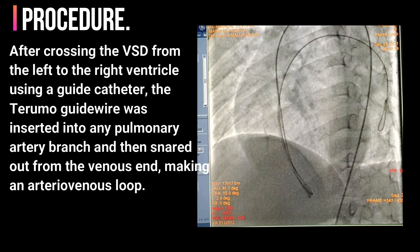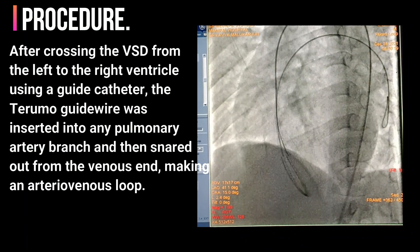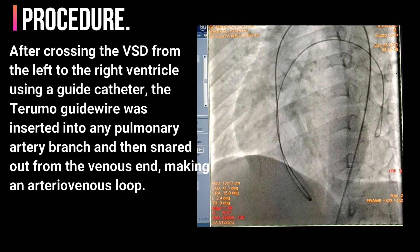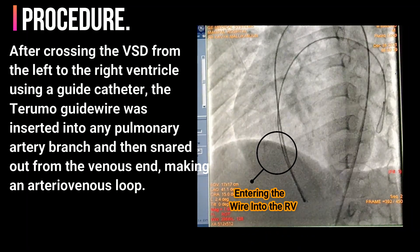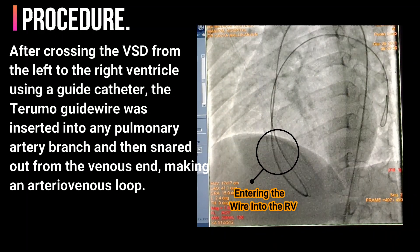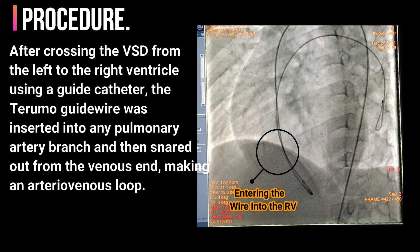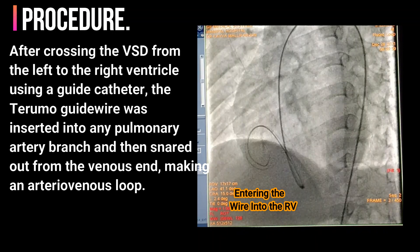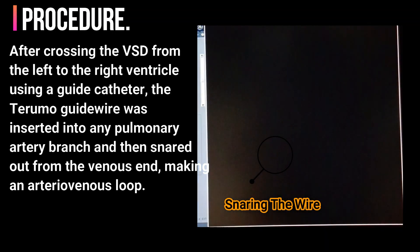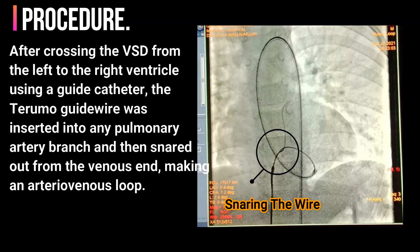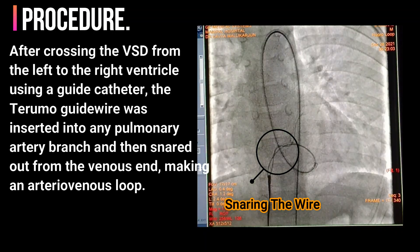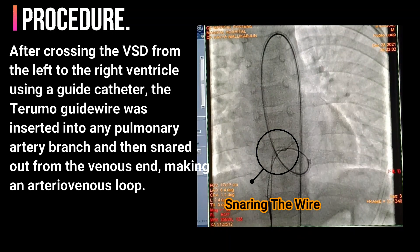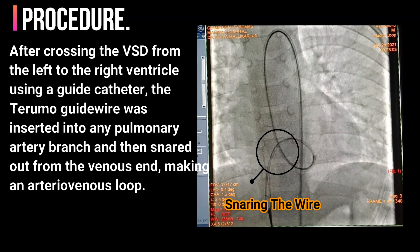In this case, after crossing the VSD from the left to the right ventricle using a guide catheter, the Terumo guidewire was inserted into a pulmonary artery branch and then snared out from the venous end, making an arteriovenous loop.